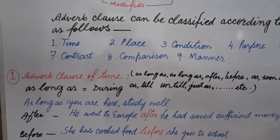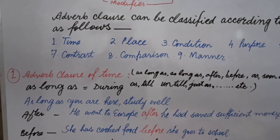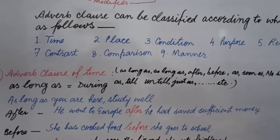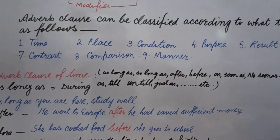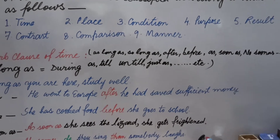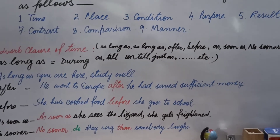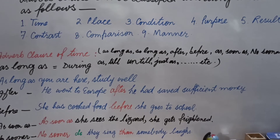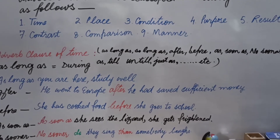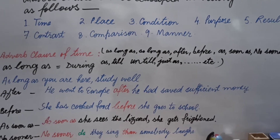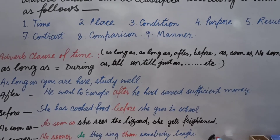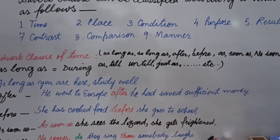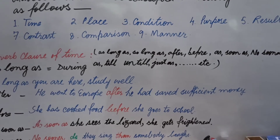Next, the conjunction 'after.' 'After' can be used in the middle of the sentence or in the beginning. For example: 'He went to Europe after he had saved sufficient money.' The clause 'after he had saved sufficient money' can be moved to the beginning: 'After he had saved money, he went to Europe.' If you use the conjunction in the beginning, put a comma in the middle. If you use it in the middle, no comma is needed between the two clauses.